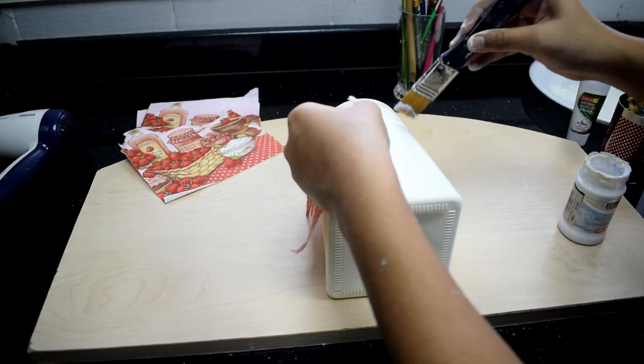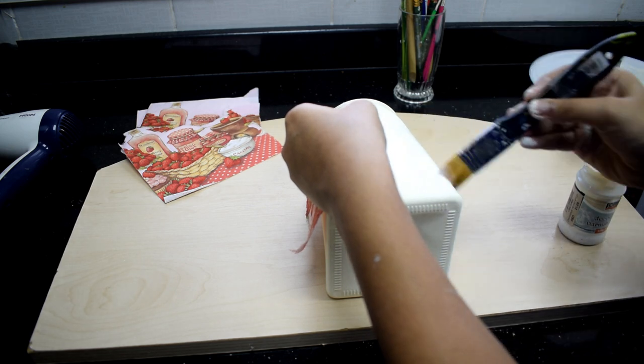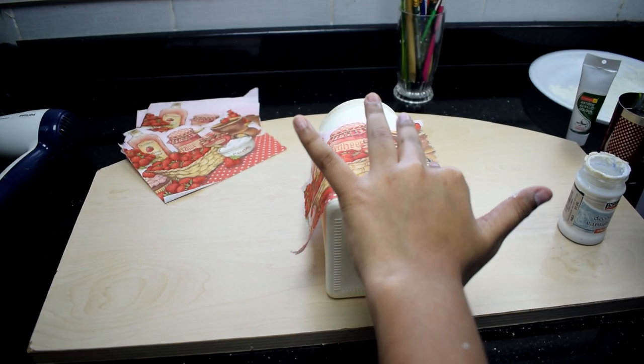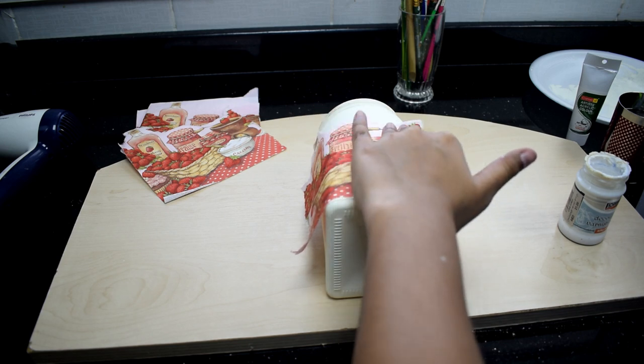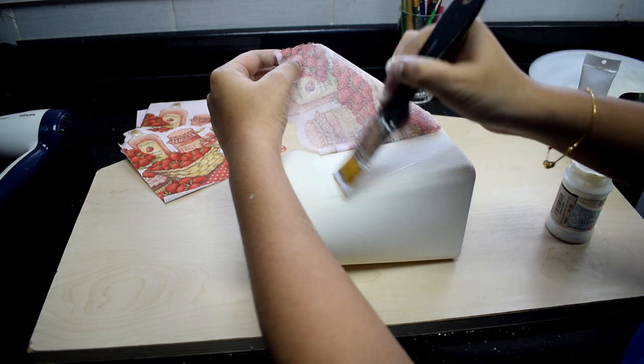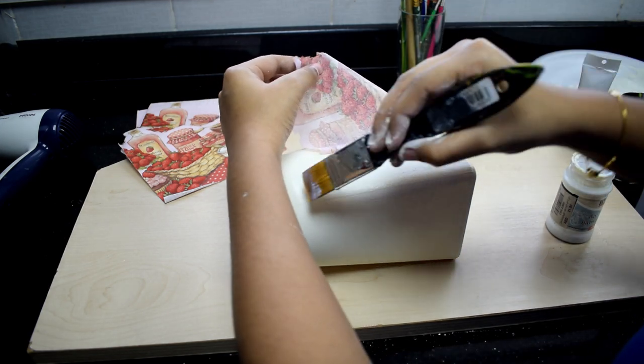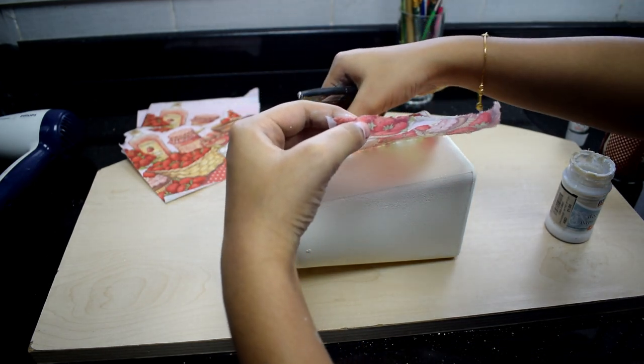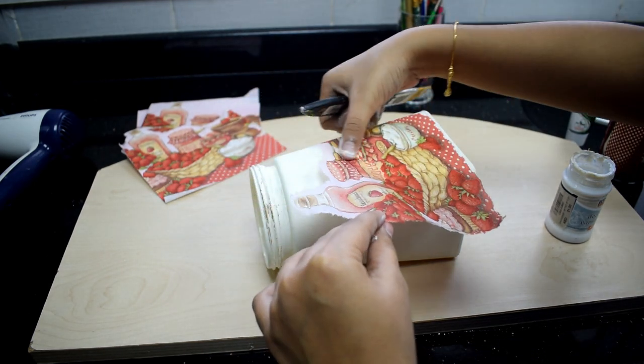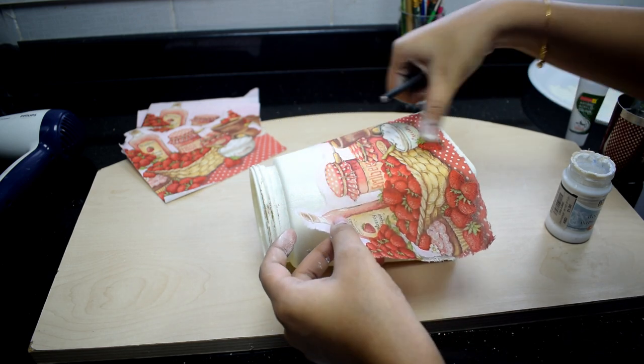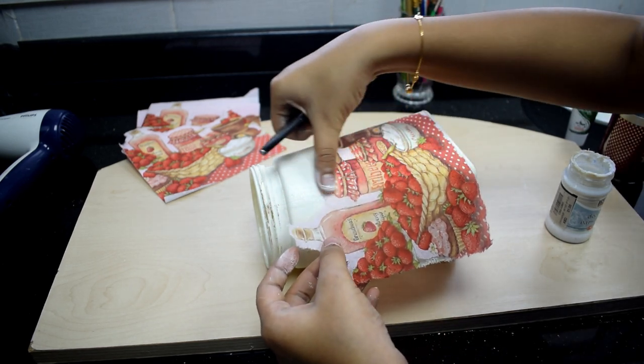Use decoupage glue varnish or mod podge. It is always better to start with the center of the paper. Apply less glue on your bottle using a flat brush. Press it gently so the air can come out. Place the paper gently wherever you have put the glue. Fix it carefully and you need to be careful when it overlaps.